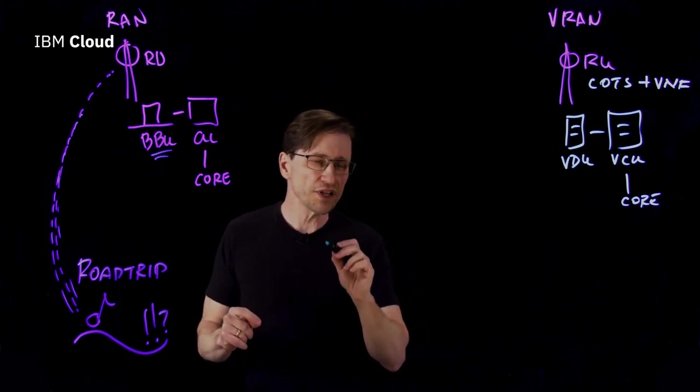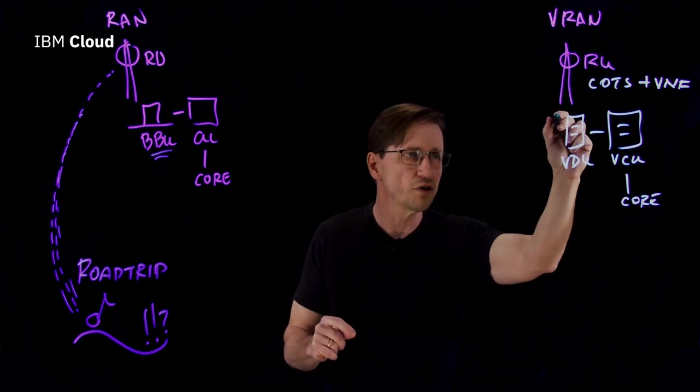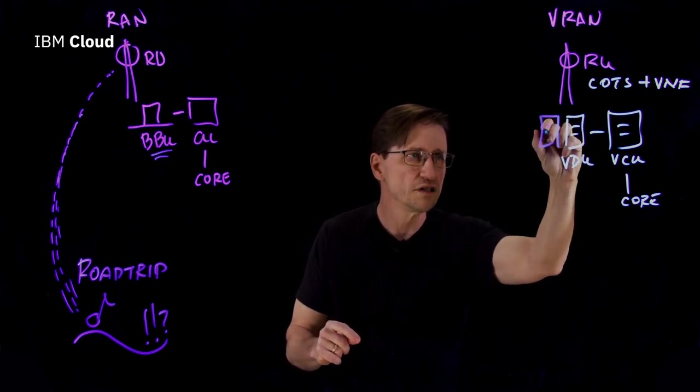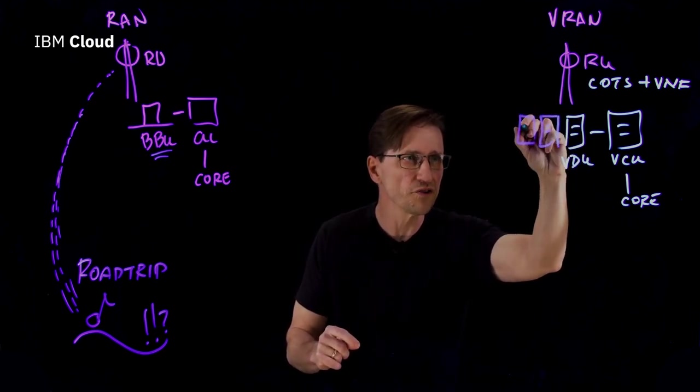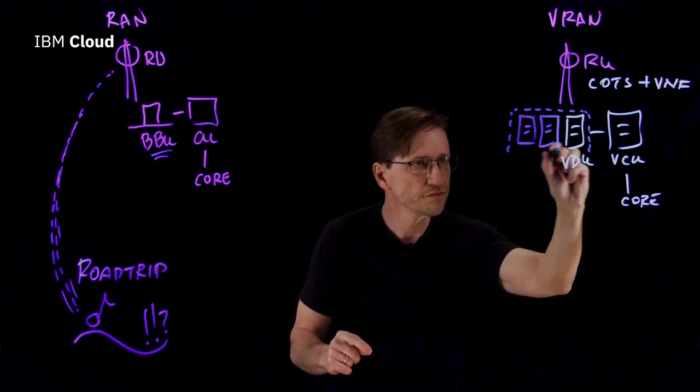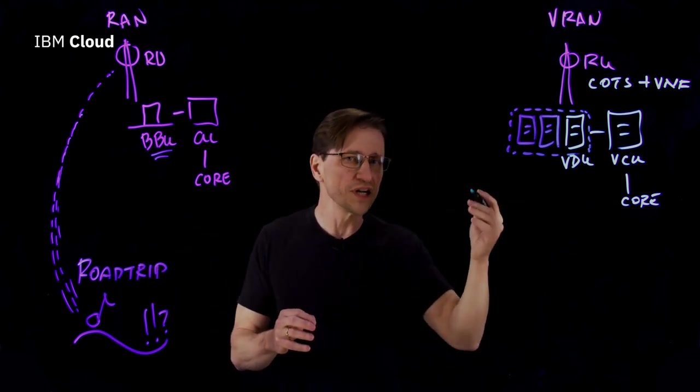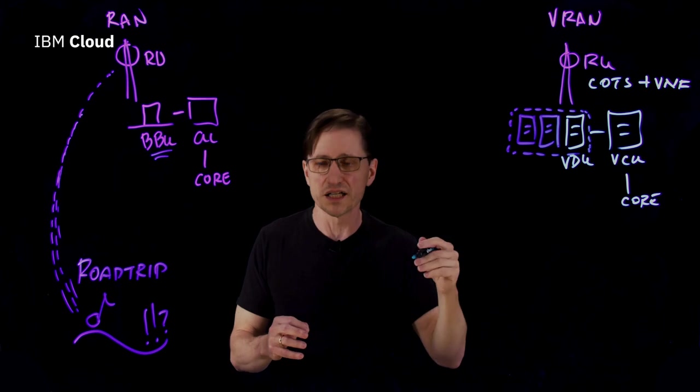The scenario plays out a little bit differently in the case of VRAN. Now I showed just one VDU in the initial drawing, but more realistically, a CSP would install multiple VDUs in what's called a VDU cluster. So that means they can handle the situation much more elegantly because they can bring on additional capacity on demand.